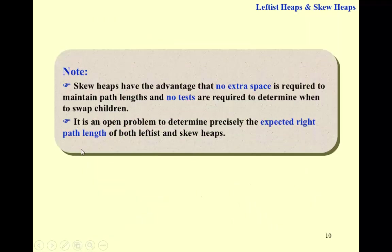There are two things to be noticed here. The first thing is about the advantage of skew heaps, is that there's no extra space required to maintain the null path lengths. And therefore, no tests, no if-else, are required to determine when to swap children. We just blindly swap them.